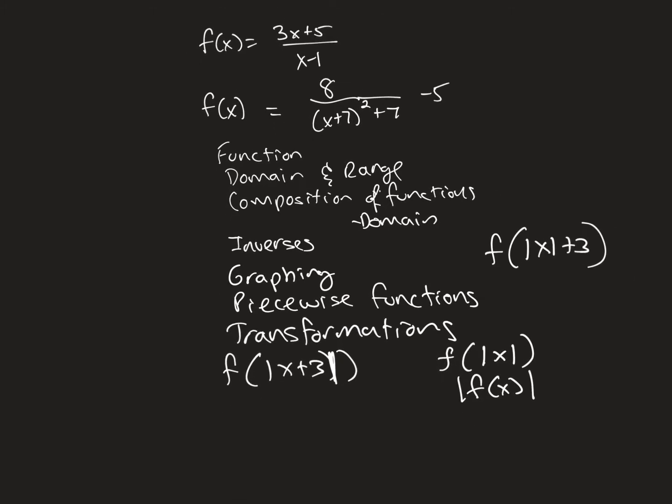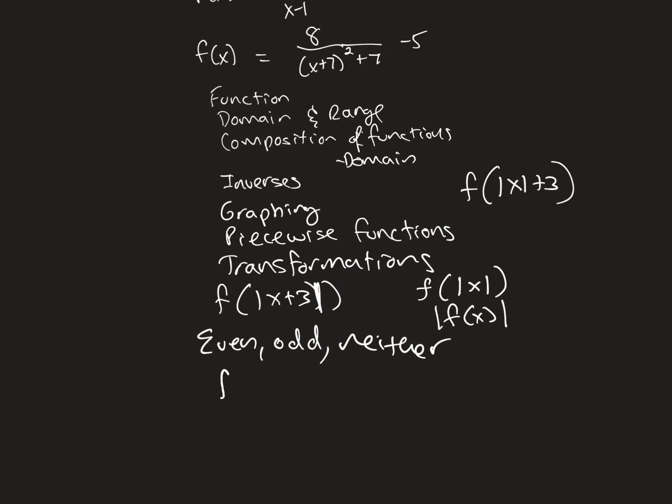...was even, odd, and neither. This recently came up on the trig test too. If a function is even, it means when I put in negative x-values, that output is the same as when I put in the positive values, or the opposite sign values. So this is even, and that's y-axis symmetry.